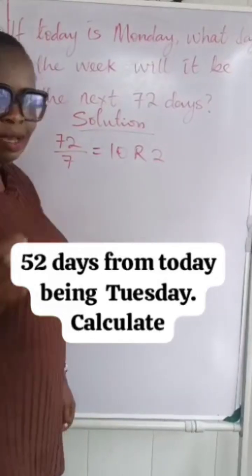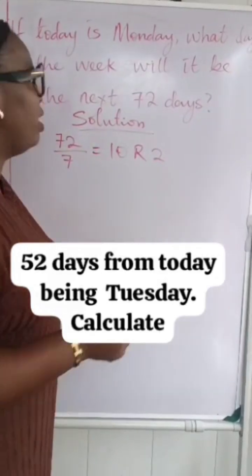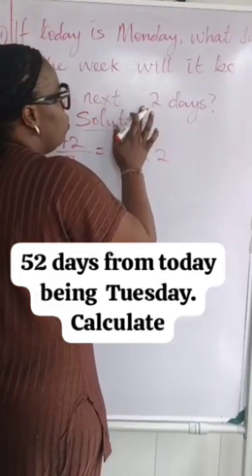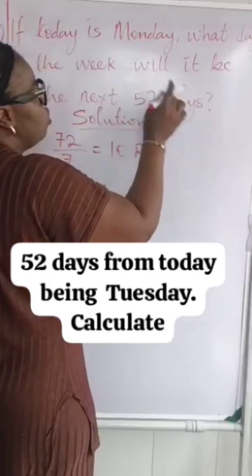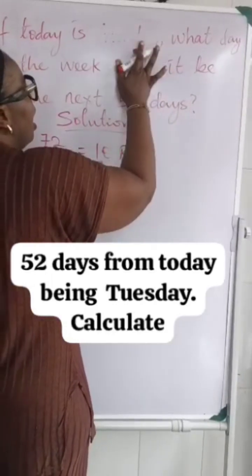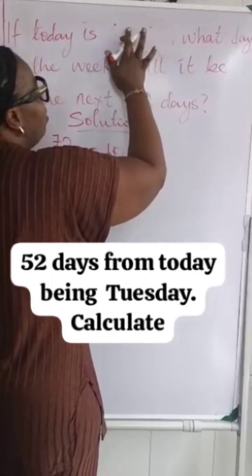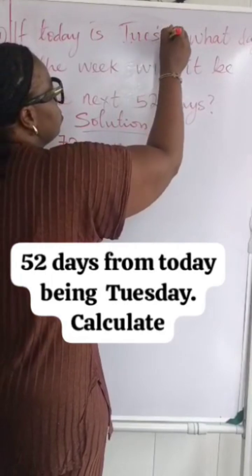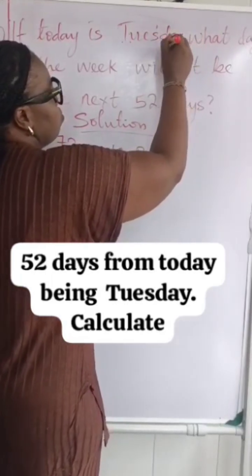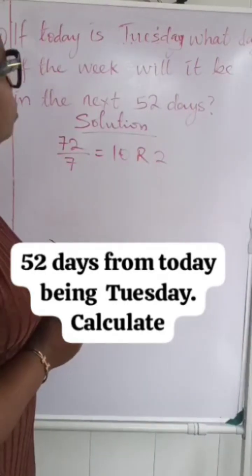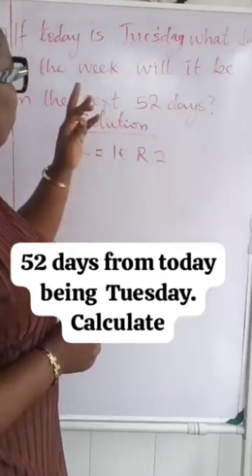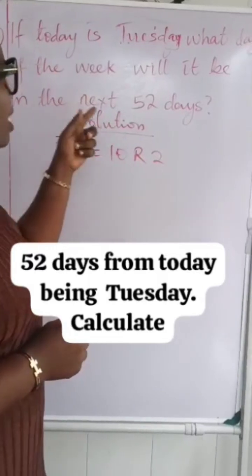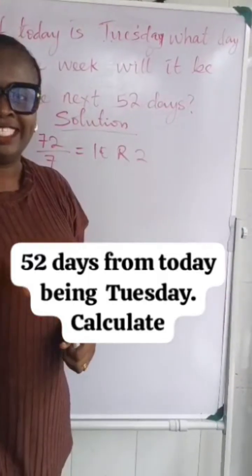Now follow the same method and give me: assuming it is 52 days — after 52 days, and here we'll have maybe Tuesday as the starting day. So if today is Tuesday, what day of the week will it be in the next 52 days?